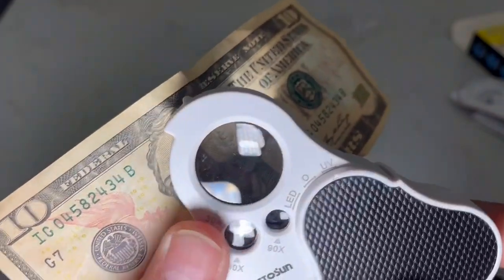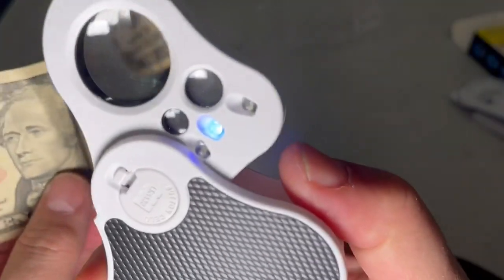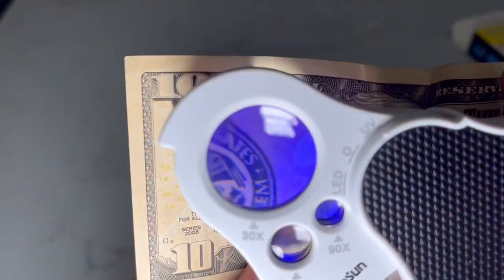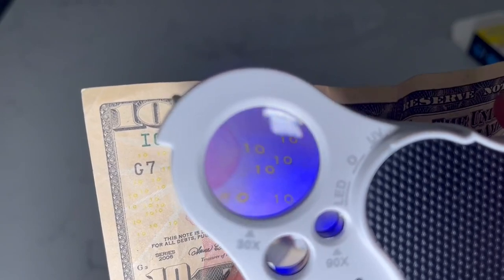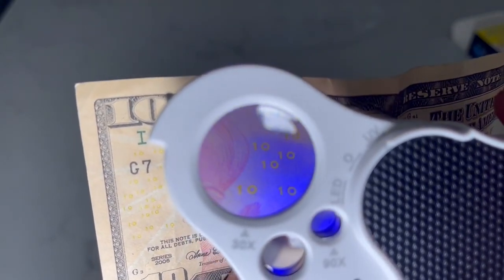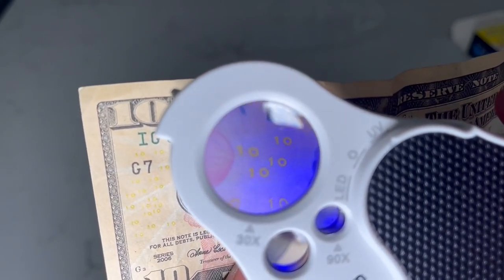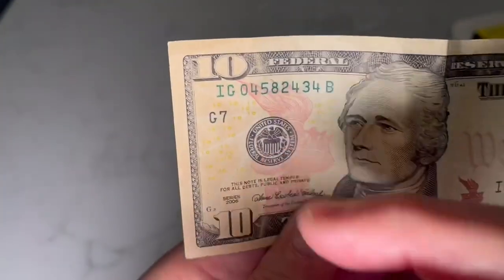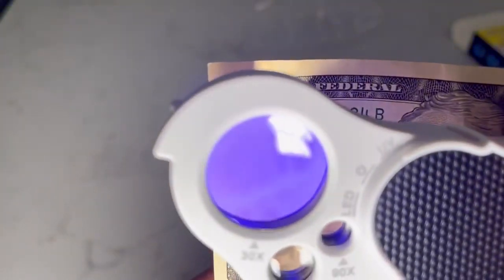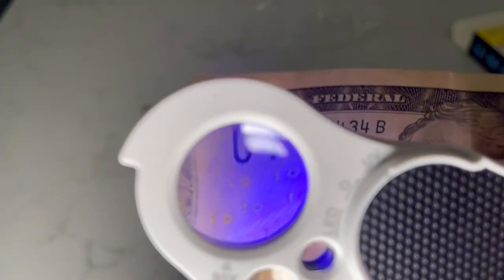So move it over to the UV. Again, you can see the UV light on. And look at that. Those little ten denomination markers pop out. That's just a security feature. You can see them with the naked eye just here. But with the UV, they really pop out.